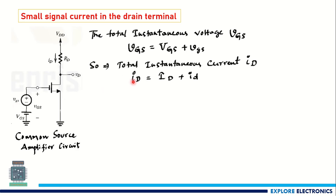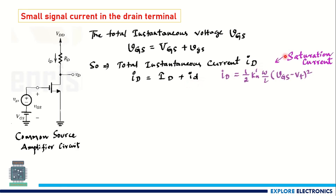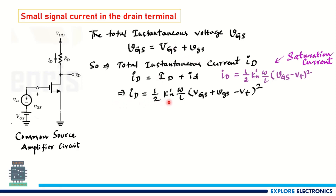With respect to the total gate-source voltage, the instantaneous drain current has a DC component ID and a small signal component id. The saturation current expression is: iD = (1/2) · k'n · (W/L) · (VGS − VT)². Substituting the total VGS — that is VGS + vgs — into this expression gives iD = (1/2) · k'n · (W/L) · (VGS + vgs − VT)².